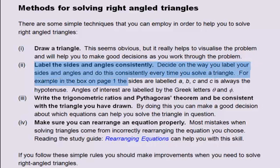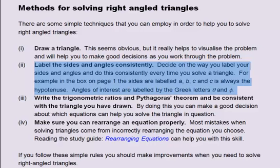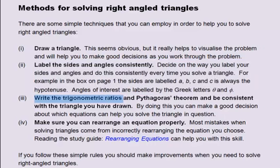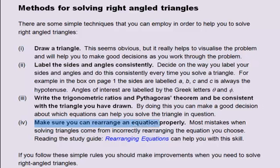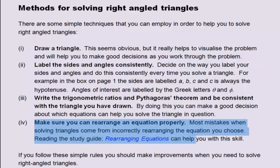For example, in the box on page 1, the sides are labelled a, b and c, and c is always the hypotenuse. Angles of interest are labelled by the Greek letters theta and phi. Write the trigonometric ratios and Pythagoras' Theorem, and be consistent with the triangle you have drawn. By doing this, you can make a good decision about which equations can help you solve the triangle in question. 3. Make sure you can rearrange an equation properly. Most mistakes when solving triangles come from incorrectly rearranging the equation you choose. Reading the study guide Rearranging Equations can help you with this skill.